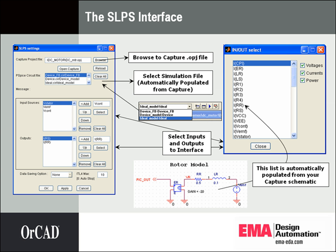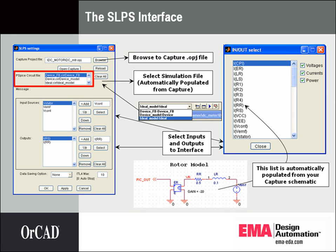Here we see a breakdown of the interface. The interface is launched from the Simulink window. You will have an SLPS block that you can place into your design. Once placed, double-clicking on it will bring up the SLPS settings window. It will link to a Capture project file, so this SLPS window is basically a PSPICE sub-circuit right in your Simulink flow.